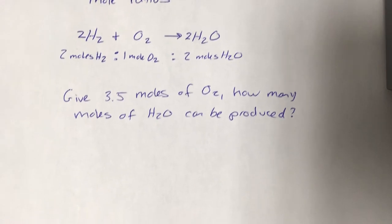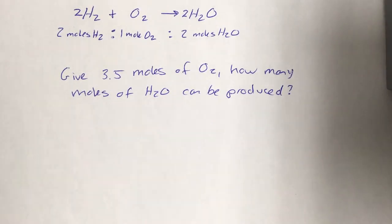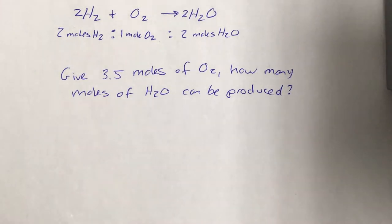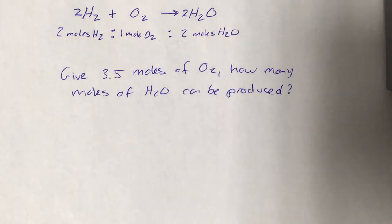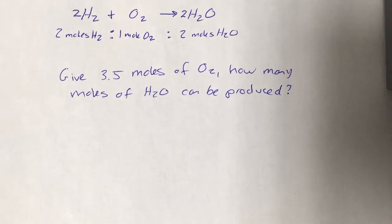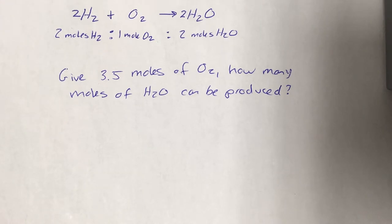So the question could read like this: given 3.5 moles of oxygen how many moles of water can be produced? Again not the straight up simple convert so many grams of water into moles of water or convert so many moles of water into molecules of water. It's not that simple sounding type of question. This one actually makes a prediction. This one sounds like some real chemistry here. If I have this much oxygen how much water can I make with that? It's a real prediction. This is real chemistry. Again this conversion here this math here is the heart of stoichiometry.